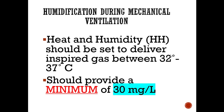For humidification during mechanical ventilation, heat and humidity should be set to deliver inspired gas between about 32 and 37 degrees Celsius — that's the general range on most heaters. A big flashcard number: if you are bypassing the upper airway — with an endotracheal tube, tracheostomy, or high-flow blenders — you should be providing a minimum of 30 milligrams per liter of water vapor content to avoid causing dysfunction to the patient's lungs.